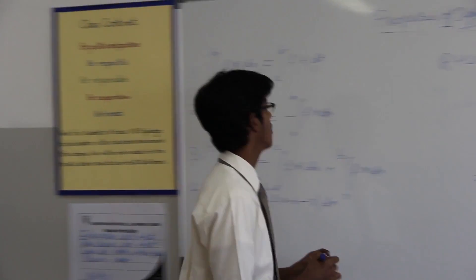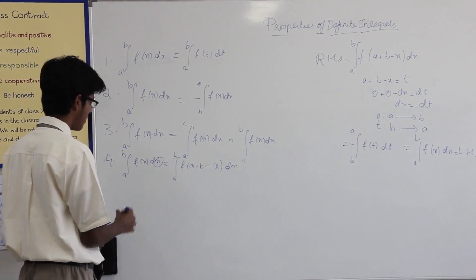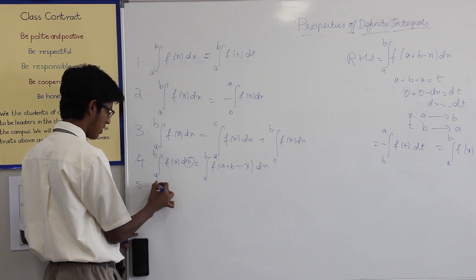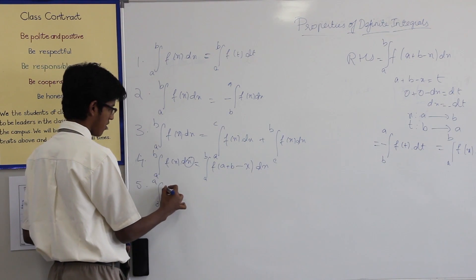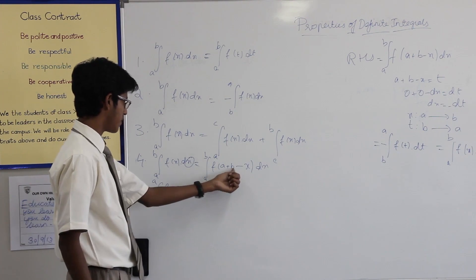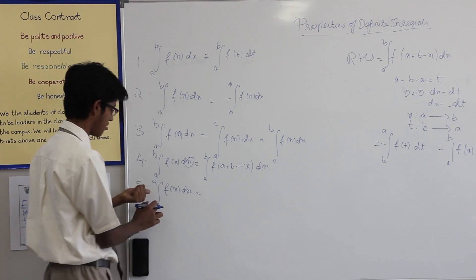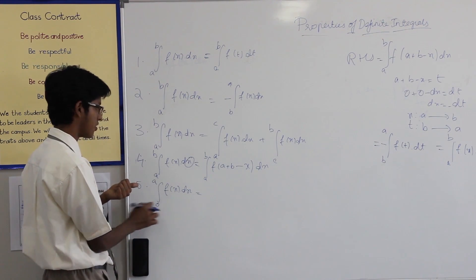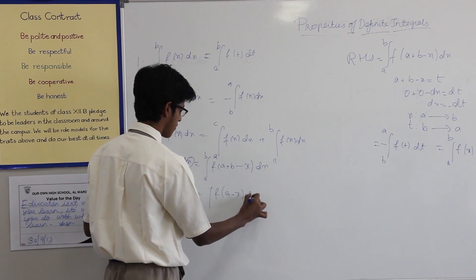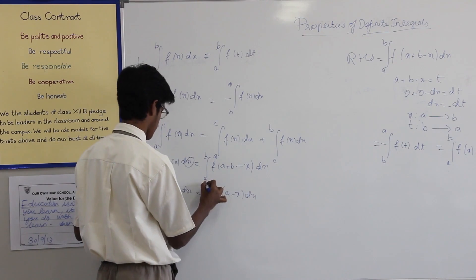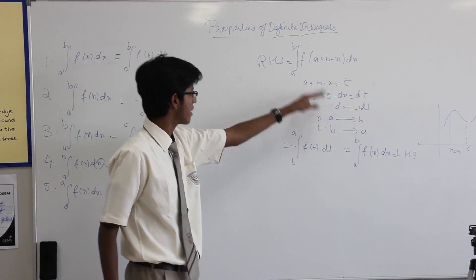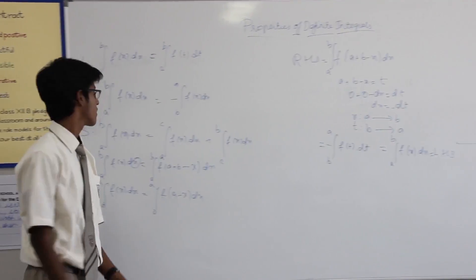The fifth property is quite similar — it is just a special case of the fourth, where the lower limit is 0 and the upper limit is a constant a. So the integral of f of x dx from 0 to a can be written as the integral from 0 to a of f of (a minus x) dx. Here b is a and a is 0, so just substitute those values and you get f of (a minus x) dx. The proof is the same — you will get the same answer.